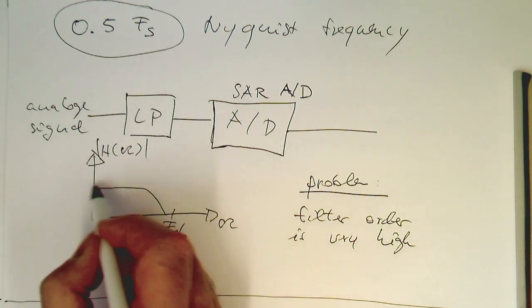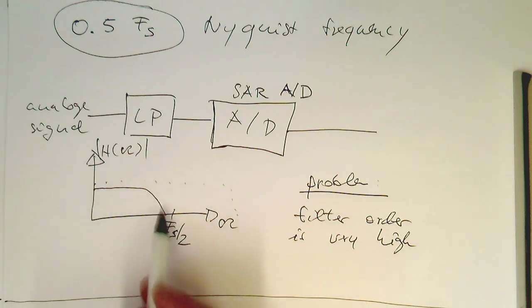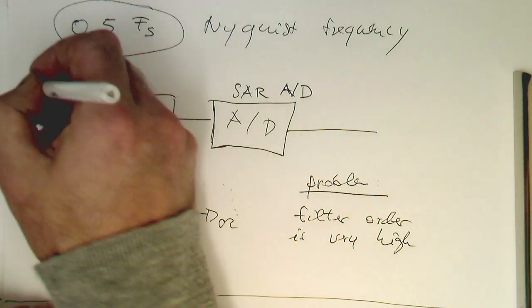So if the original signal goes like this, then we need to have a very strong damping, that these frequencies really don't show up. And as we know, every order gives us six decibel per octave. So therefore, we need quite a high filter order to achieve this. So that's option one.